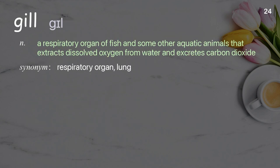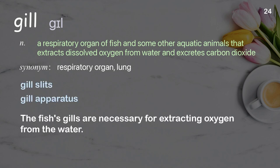Gill. A respiratory organ of fish and some other aquatic animals that extracts dissolved oxygen from water and excretes carbon dioxide. Examples: gill slits, gill apparatus. Sentence: The fish's gills are necessary for extracting oxygen from the water.